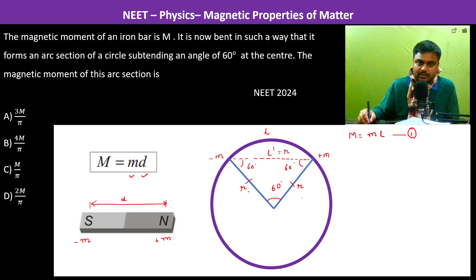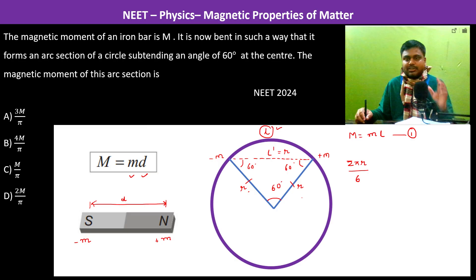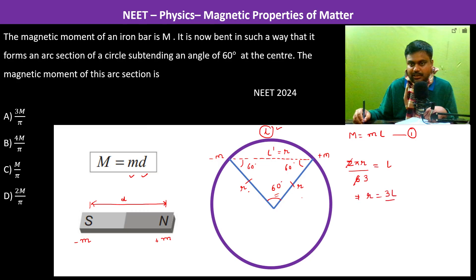Now if you see, the 60 degree arc is of length l, so therefore we can write 2 pi r by 6. That is like one-sixth of the circumference because it is subtending an angle 60 degrees. This is equal to l, so therefore r becomes 3l by pi.